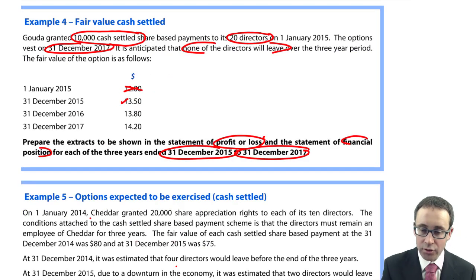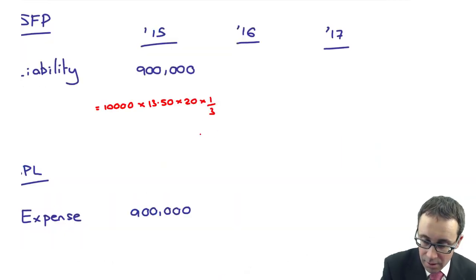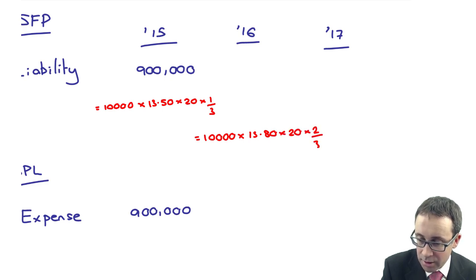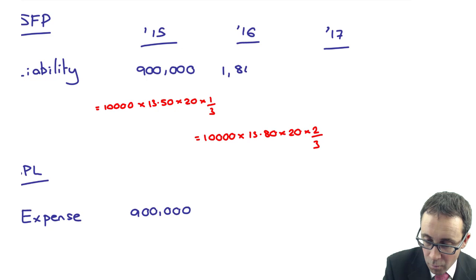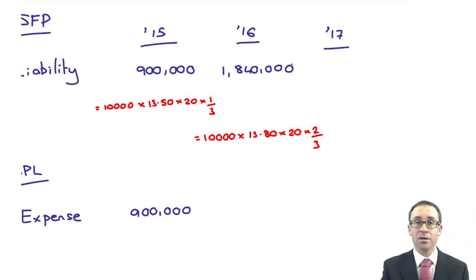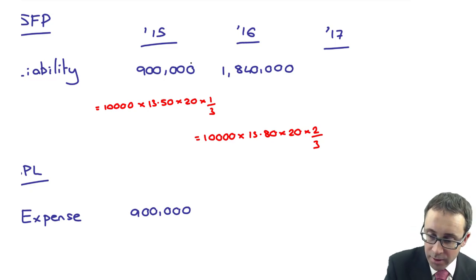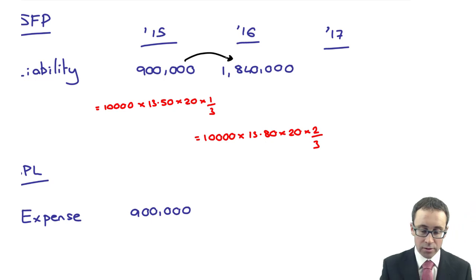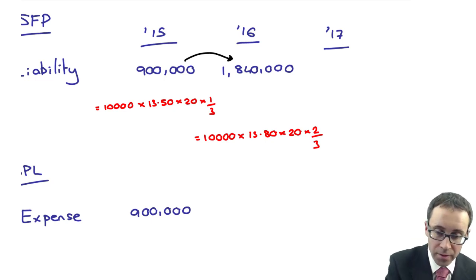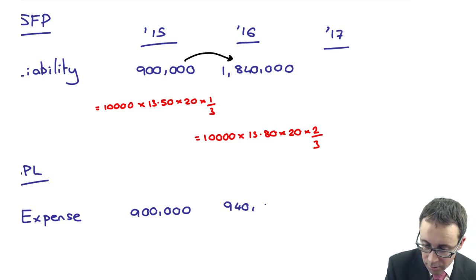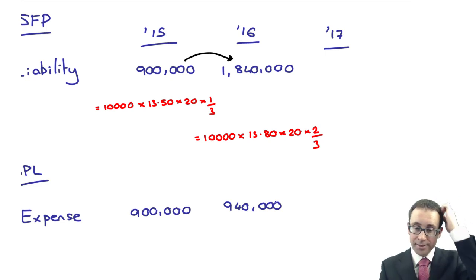Year two, it gets a little bit more interesting. Because now the fair value at that second reporting date is $13.80. So what you've got there, $10,000 cash-settled share-based payments, $13.80, 20 directors, remember nothing changes with regards to the number of directors leaving. Does that give me $1.84 million? Remember, what we need to do is we need to look at the movement. It's the movement that goes to the statement of profit or loss. And that movement is $940,000.